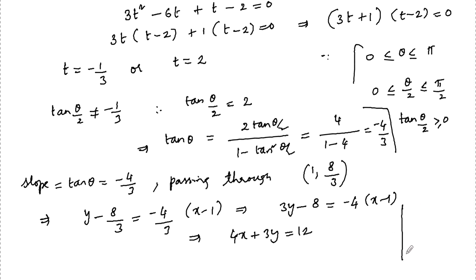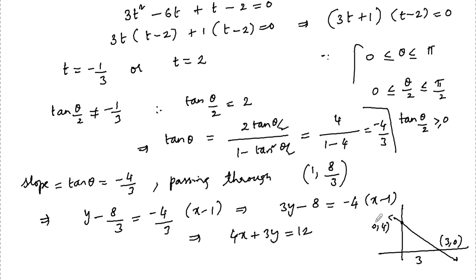We can now find the intercepts of the line 4x + 3y = 12. Setting y = 0 gives x = 3, so the x-intercept is (3, 0). Setting x = 0 gives y = 4, so the y-intercept is (0, 4). The x-intercept is 3 and the y-intercept is 4.